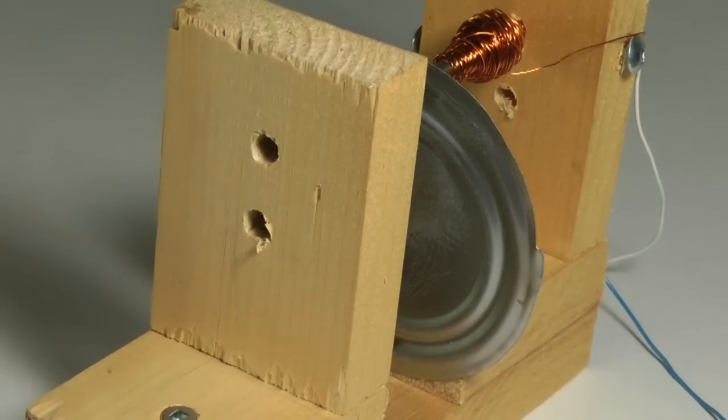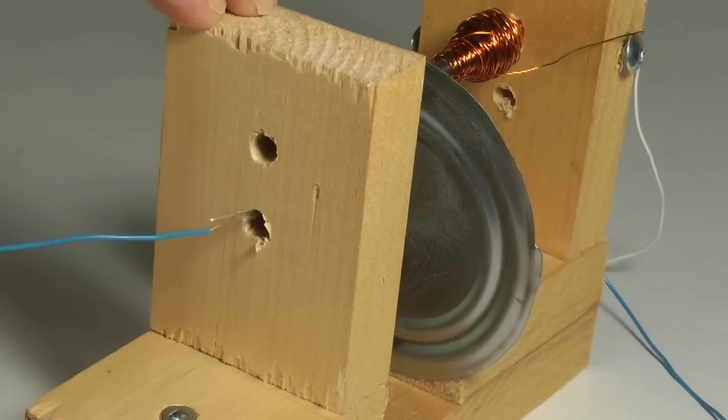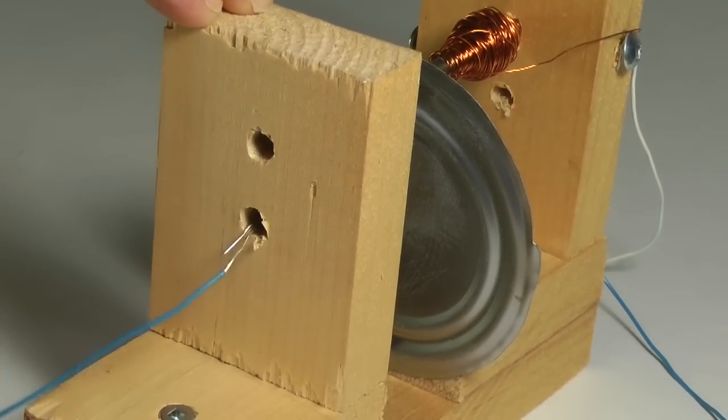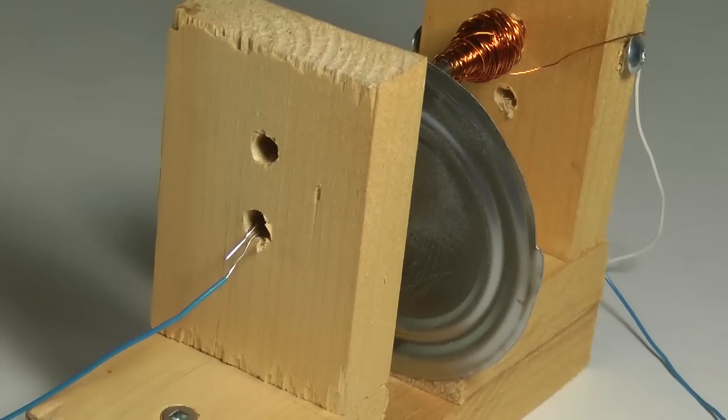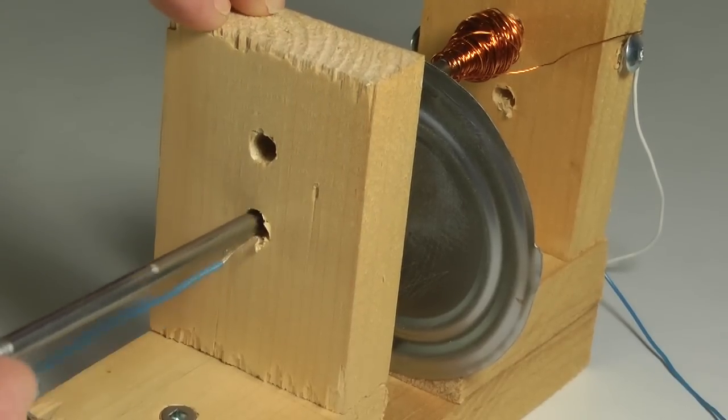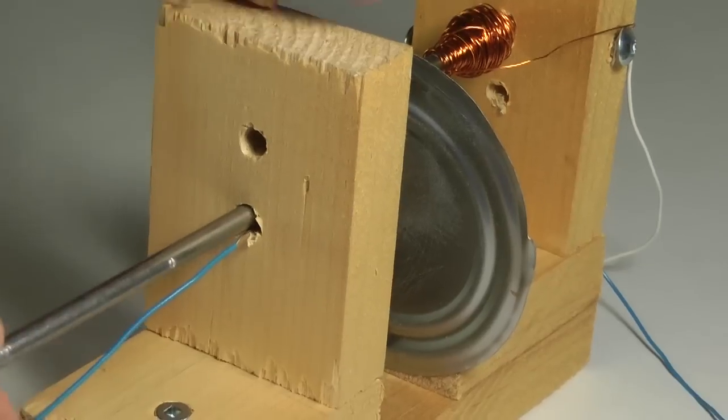Another nail is used to create the contact or switch. The nail fits into a hole in the other wood upright. A bared wire, laid in the hole, provides an electrical contact to the nail.